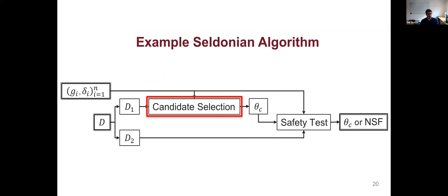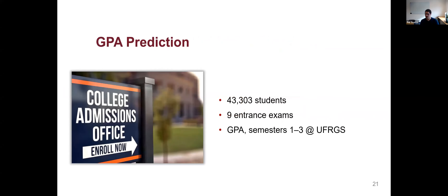For candidate selection — it could be your favorite off-the-shelf method, but this is more complicated than you'd think. The model you think is best may not pass the safety test. So candidate selection should optimize the primary objective but limit its search to solutions it predicts will pass the safety test. We use D1 to predict the outcome of the safety test using D2 — what do we think the safety test will return when run on D2 — and limit our search to solutions that we predict will pass.